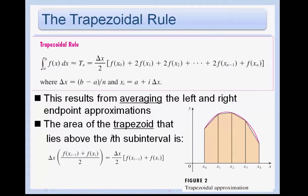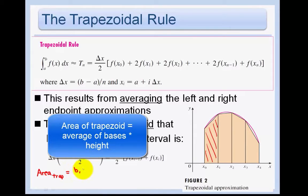Now we're going to learn the trapezoidal rule. Instead of creating a rectangle underneath the curve, you're going to create a trapezoid and add up the areas of those trapezoids. Remember that the area of a trapezoid is the average of the bases times the height. In a rectangle you have base times height, but here we don't have a uniform base, so we do one-half of base one plus base two — the average base — times the height.